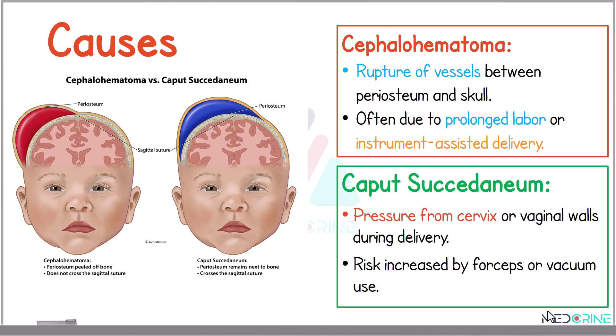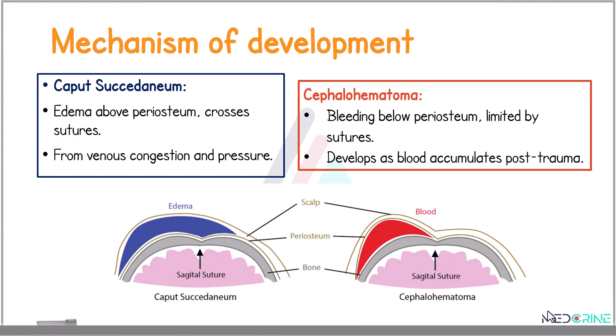Looking at these two images, you are able to differentiate between caput succedaneum and cephalohaematoma. Caput succedaneum occurs as edema above the periosteum, it crosses the suture lines, and forms from venous congestion and venous pressure. In cephalohaematoma, the bleeding is below the periosteum, it is limited by the sutures, and develops as blood accumulates post-trauma.